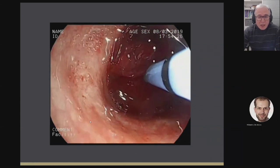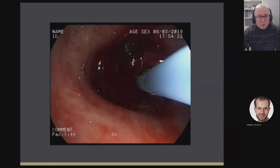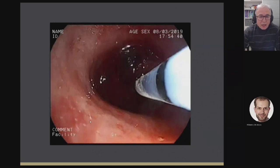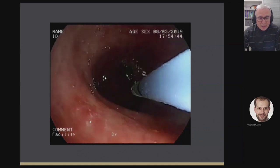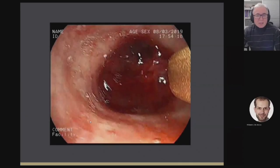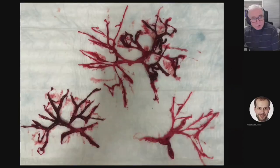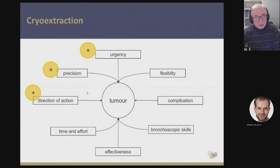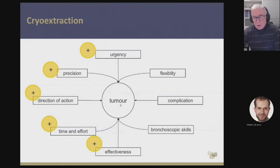For blood clot removal, the technique is different: you go inside the blood clot, freeze, and then push the cryoprobe downward and upward. This avoids sticking to the bronchial wall and allows you to retrieve very large blood clots. In summary: cryoablation is useful for early cancer and granulation tissue. Cryo extraction is an immediate technique — it's precise, has lateral and axial action, allows working from distal to proximal, has a quick setup, and is quite effective. The first video I showed took about 10–11 minutes. It's easy to use, but there are some problems with bleeding in highly vascularized tumors. The probes are flexible.